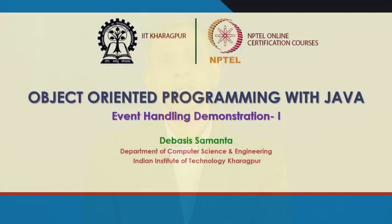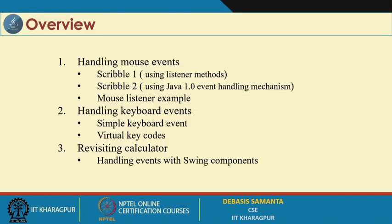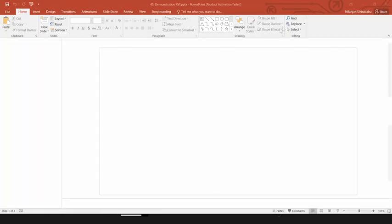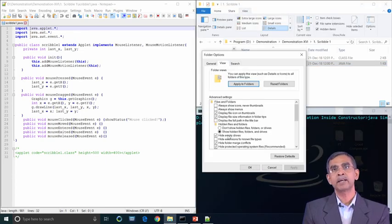Welcome to this demonstration session. This demonstration is based on the topic of event handling mechanism in Java, which we covered in the last module under AWT programming part 3. We know what the event handling concept is, and in our theoretical class we discussed examples like Scribble 1, Scribble 2, the mouse listener example, keyboard events, and finally an idea about the calculator. In this demonstration we will repeat the same thing in more detail.